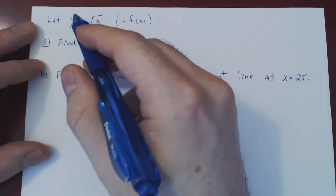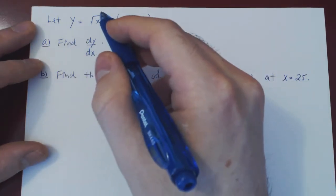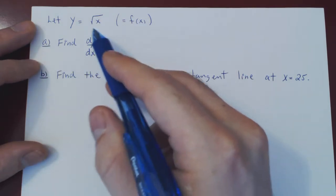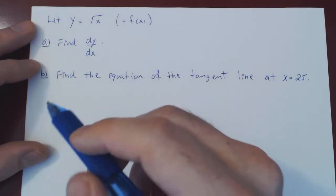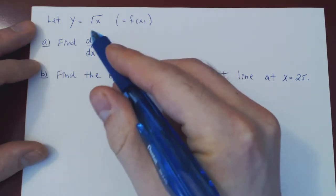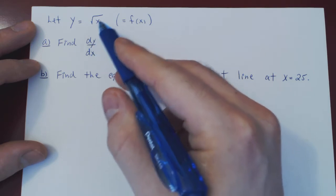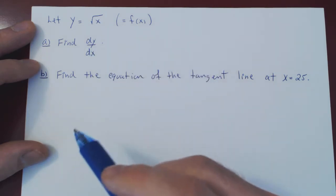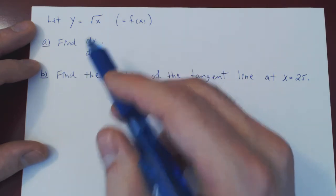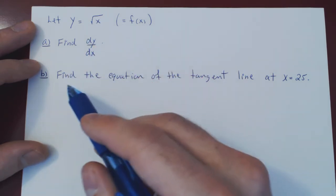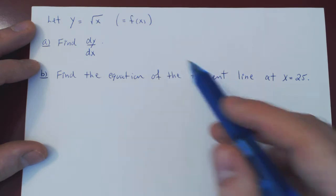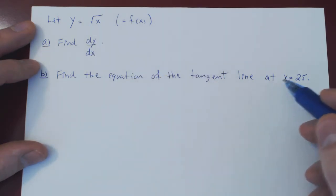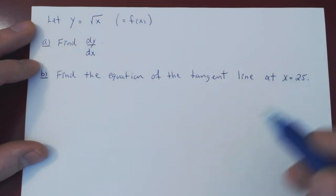Given the function y equals the square root of x, we will first find its derivative — the slope of the tangent line to the function at any given value of x — and then we will use this to find the equation of the tangent line to our function at the point x equals 25.